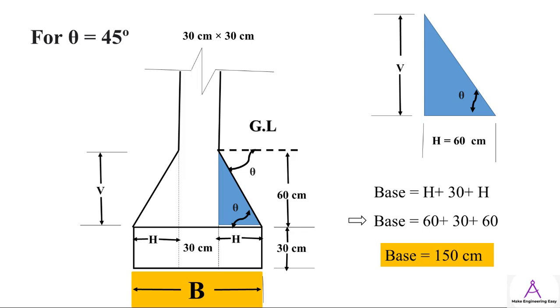Plug back the value of H in the equation. As we know that base of the footing equals H plus 30 plus H. By putting the value of H, 60 cm plus 30 cm plus 60 cm, we get the base of the footing equal to 150 cm.